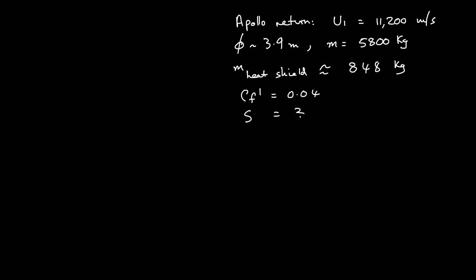I'll now go through an example of using these relationships for the Apollo return mission. A few well-known properties: the velocity was 11,200 meters per second, diameter of the capsule 3.9 meters, mass was approximately 5,800 kilograms, mass of the heat shield was on the order of 848 kilograms. I'm taking a value of mean friction coefficient at 0.04, something of a guess. Exposed surface area is 30 meters squared, the external surface that's exposed to the flow. The projected area 12 meters squared. These are our inflow conditions. We want to find out how much heat do we have to design for this mission.